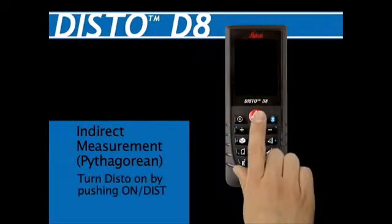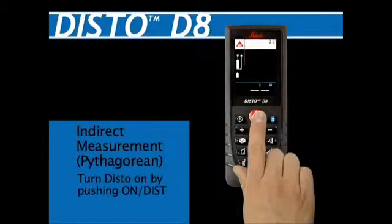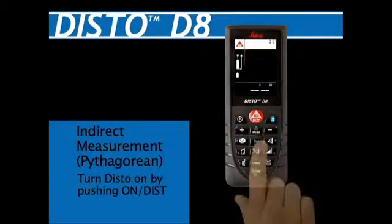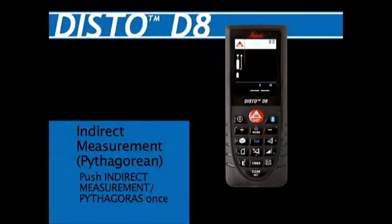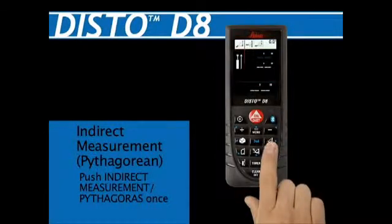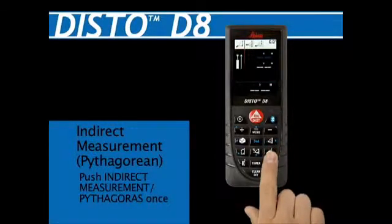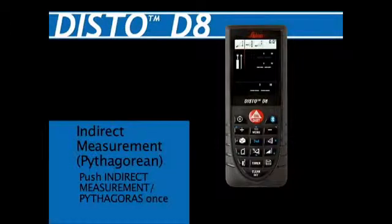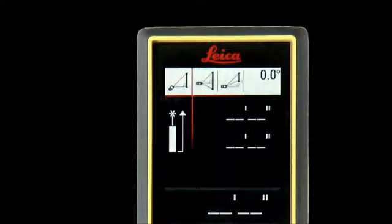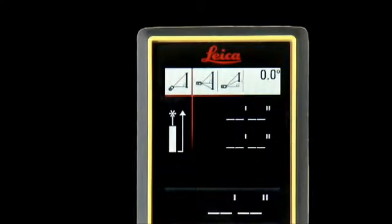Turn the Disto unit on by pushing the on/dist red button at the top of the center keypad. Push the indirect measurement Pythagoras button one time — the third button down on the right — to select a simple point-to-point measurement. The Pythagoras 1 icon will appear in the upper left corner.